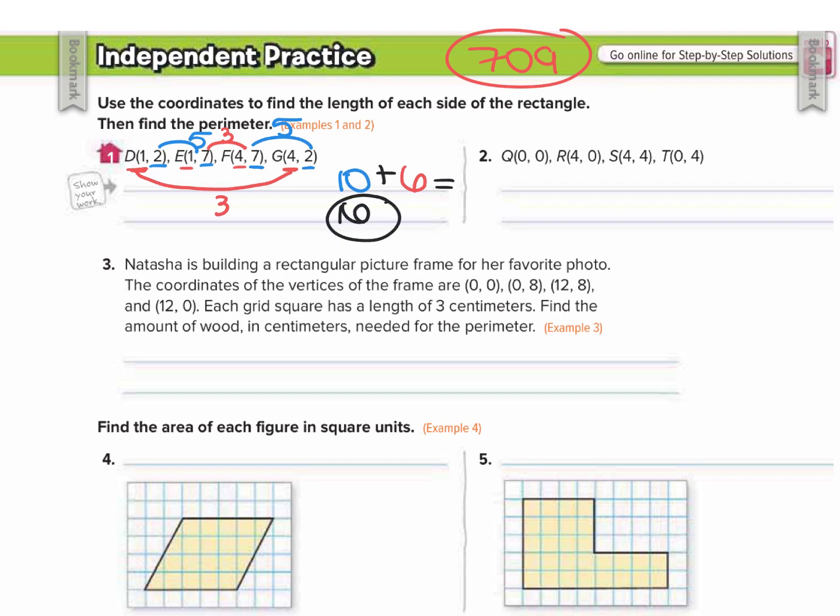Number 2, same thing. From (0, 0) to (4, 0), the zeros didn't change. What changed is from 0 to 4 in the x-coordinate, that's a distance of 4. Then from (4, 0) to (4, 4), the x-coordinate stayed the same but the y-coordinate moved 4 units. You don't even really need to do the other two because the problem told us these are rectangles, and we know that rectangles have two sides the same and two sides the same. So this rectangle is actually a square.